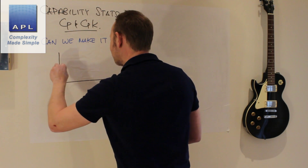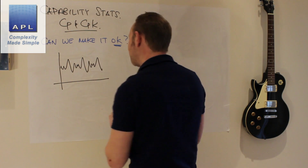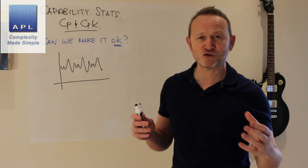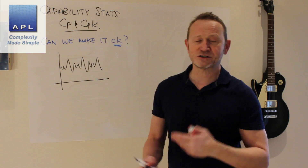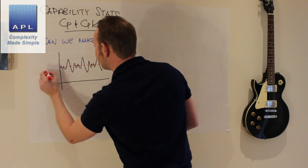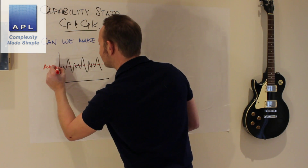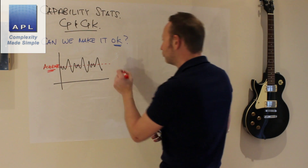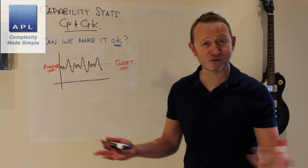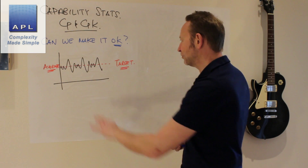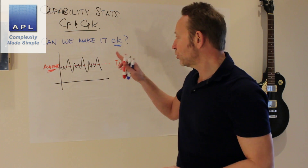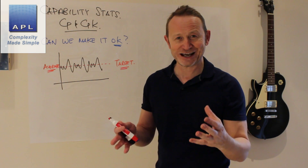Typically, you go out to your process and collect some data. It's very important that this data is hands-off — you are trying to observe the natural pattern of the process. Once you have that data, you are trying to evaluate two things essentially: we work out the average of our data set, what we want to know is does the average hit the target. But we've also got to evaluate the variability — how much spread have we got in this process? Does the spread fit inside the tolerances?